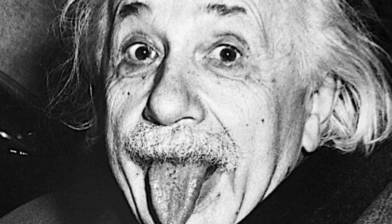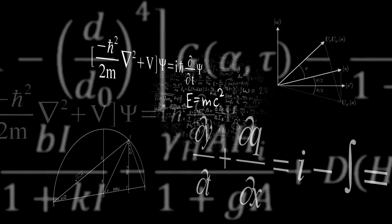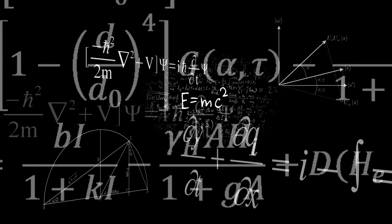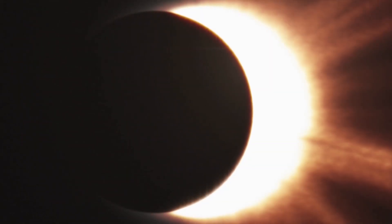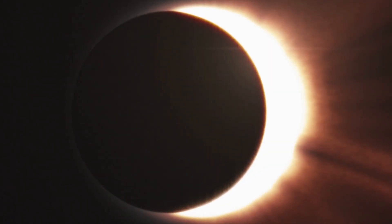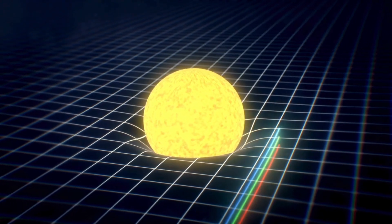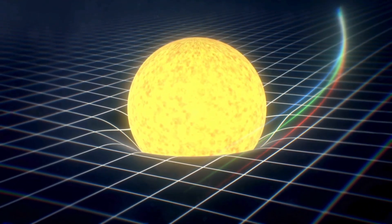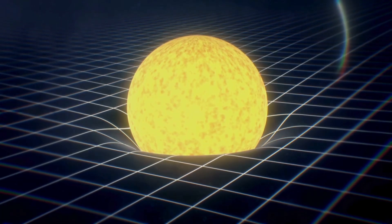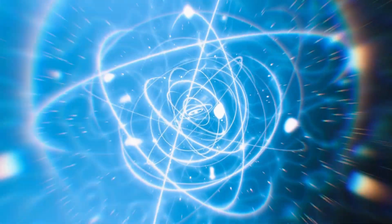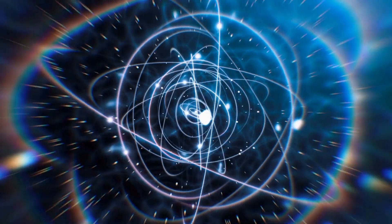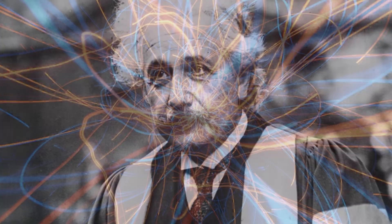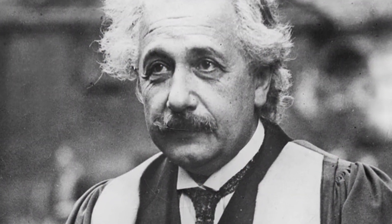Before Einstein, time was thought to be universal and absolute, ticking uniformly for everyone. His work revealed that time is relative and depends on the observer's motion and gravitational environment. One of the first experimental confirmations came in 1919 during a solar eclipse, when scientists observed that light bends in the sun's gravitational field, proving Einstein's predictions about space-time. Since then, countless experiments — from atomic clocks on airplanes to high-speed particle accelerators — have continued to validate Einstein's ideas.